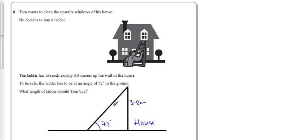We need to find the length of the ladder that Tom needs to buy. Let's call this x, how long it is from there down to there. If we assume the house is vertical and the ground is perfectly flat, we've got a right angle triangle here, so we can use trigonometry.